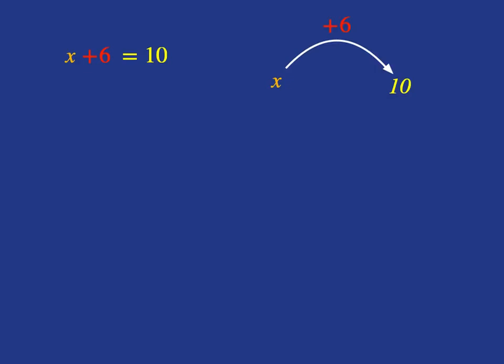To get back to x, which is what we're trying to do when we solve an equation, we just want to get back to x on its own. What we need to do is the inverse operation, which is subtract 6.